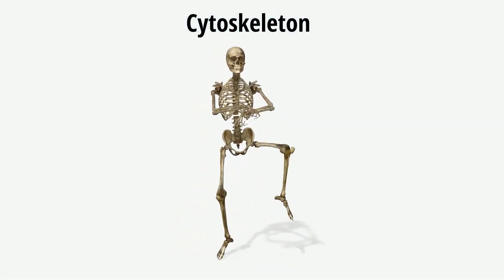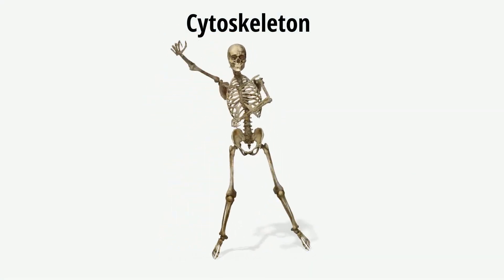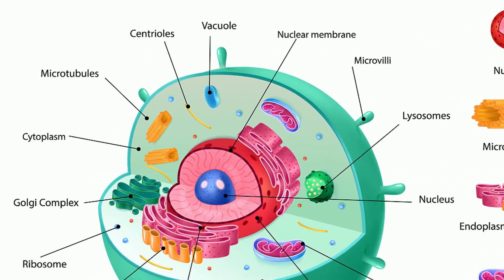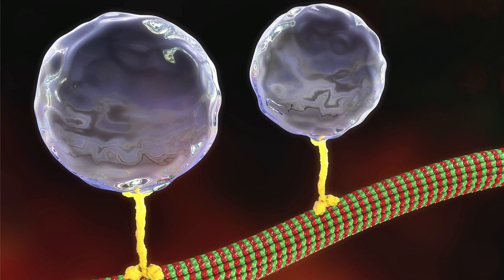The cytoskeleton, as the name implies, is the skeleton of the cell. The cytoskeleton is a network of filaments running throughout the cell. These filaments have different jobs in the cell. They help provide support, much like your skeleton. They also provide tracks or highways for the movements of vesicles and other objects.